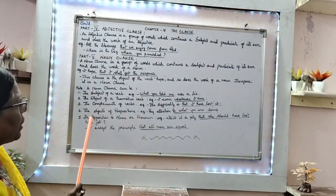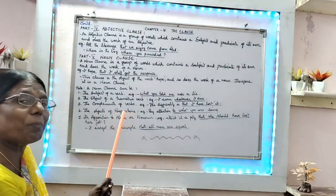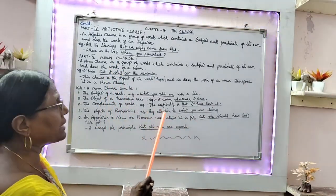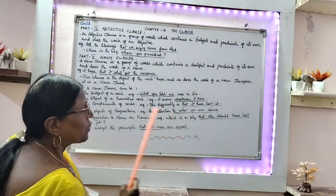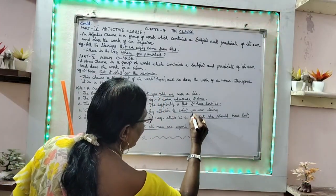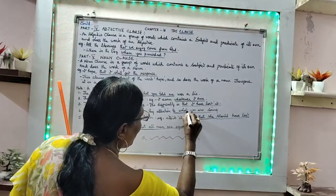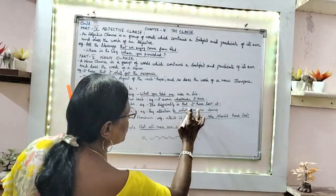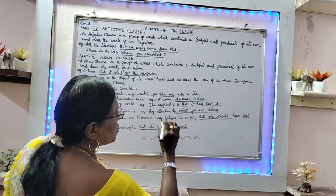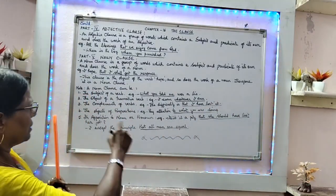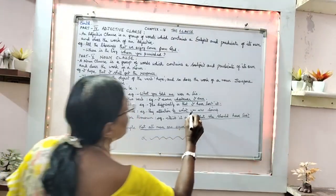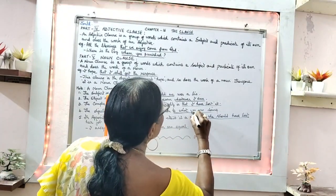Next, the noun clause comes as the object of a preposition. Example: 'Pay attention to what you are doing.' Here, 'to' is the preposition, and 'what you are doing' is the noun clause coming as the object of the preposition.